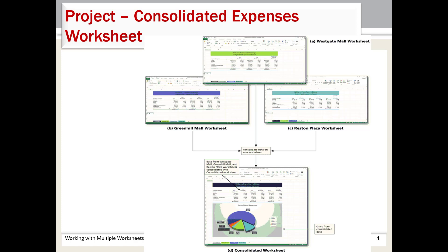The project we are going to be working on in this chapter involves worksheets for Williams Franchise Holdings, which maintains snack food kiosks in three separate retail venues. Product costs are fixed but other expenses can vary. The worksheet shows variable expenses for 2014 and projected expenses for 2015 and 2016. The company would like to know the consolidated budgets for the three kiosks, and they also want to know the individual kiosk expenses on separate worksheets.